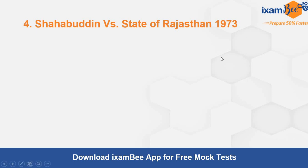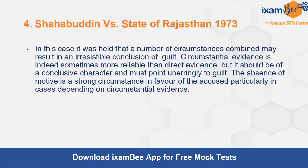Shahaguddin vs State of Rajasthan, 1973. In this case it was held that a number of circumstances combined may result in an irresistible conclusion of guilt. Circumstantial evidence is sometimes more reliable than direct evidence, but it should be of a conclusive character and must point unerringly to guilt — uska final conclusion sirf aur sirf guilt hona chahiye. The absence of motive is also a strong circumstance in favor of the accused, particularly in cases depending upon circumstantial evidence.